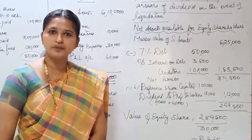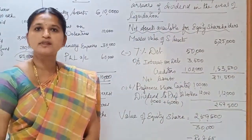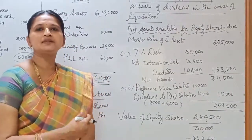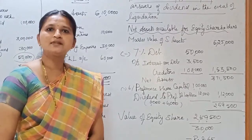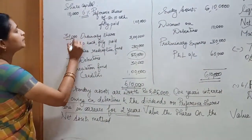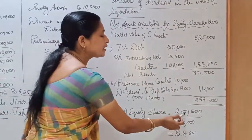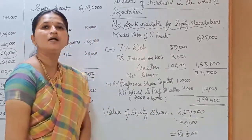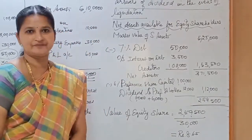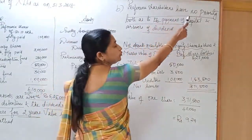The next step is to calculate the value of the equity share. The formula is: net assets available for equity shareholders divided by number of equity shares. In this problem, the term 'ordinary shares' is used, which is the same as equity shares. Number of equity shares is 30,000. So 2,59,500 divided by 30,000 gives a value of equity share equal to rupees 8.65.